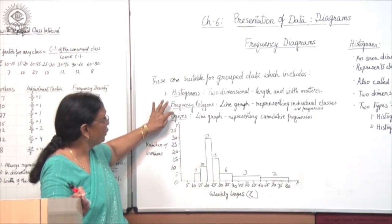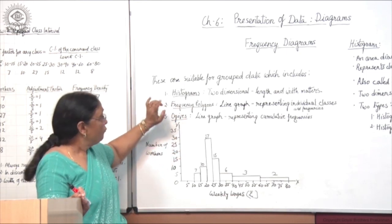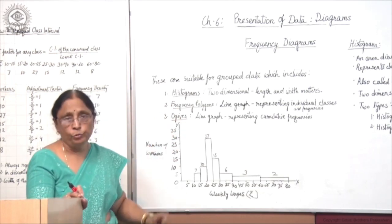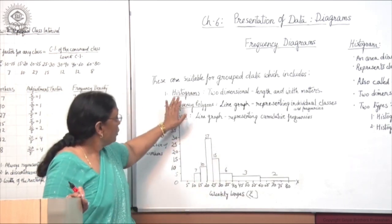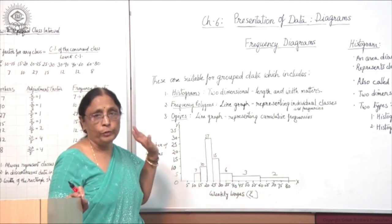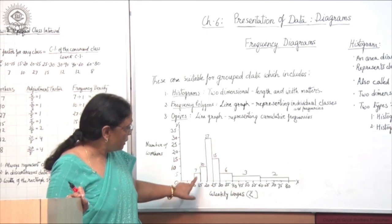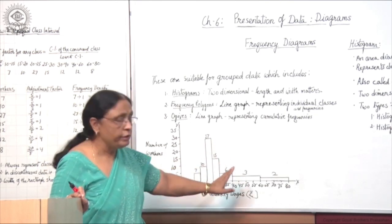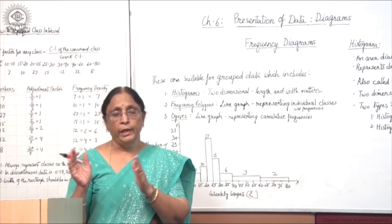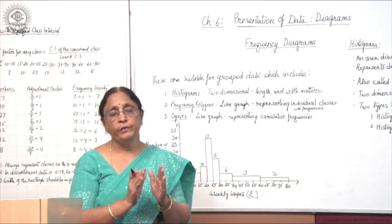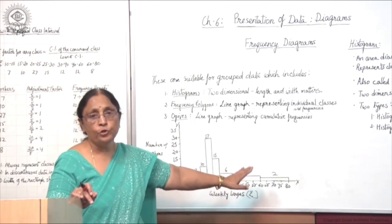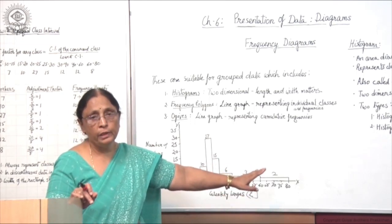These are 3 types: histograms, frequency polygons, and ogives. First we will be taking histograms, then after completing this we will move to the other two. Histograms are joined rectangles — in the case of bar diagrams, each bar was separate with equal space between the bars, but in the case of histograms, the rectangles are joined together.